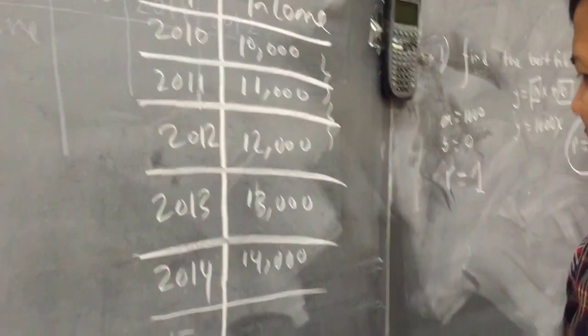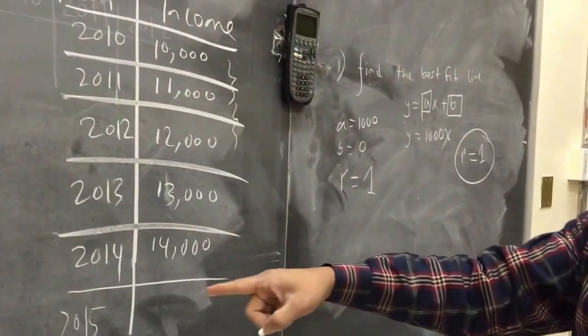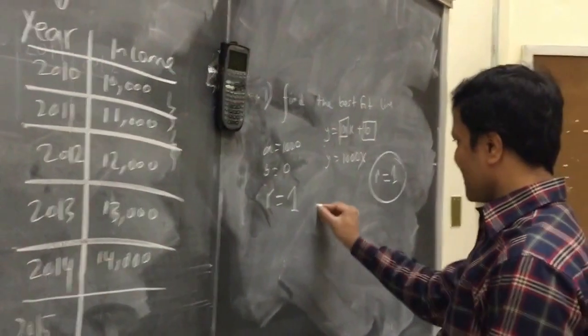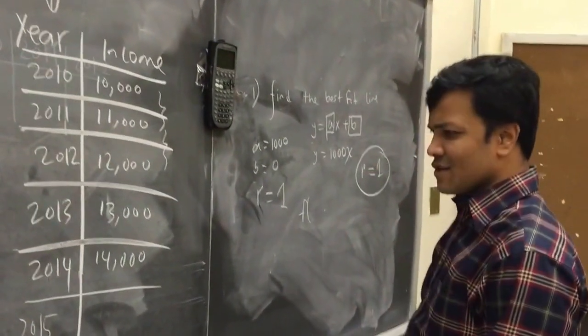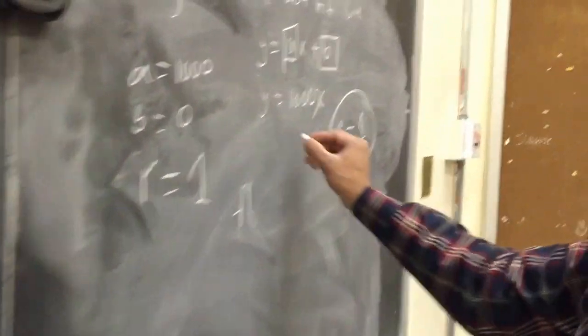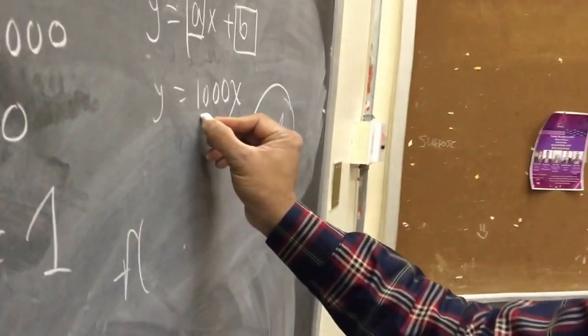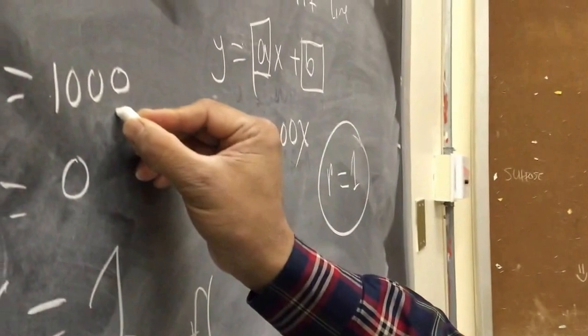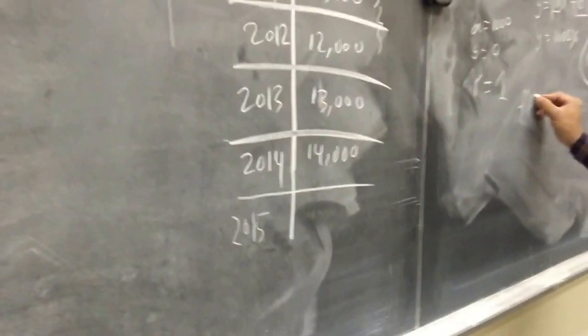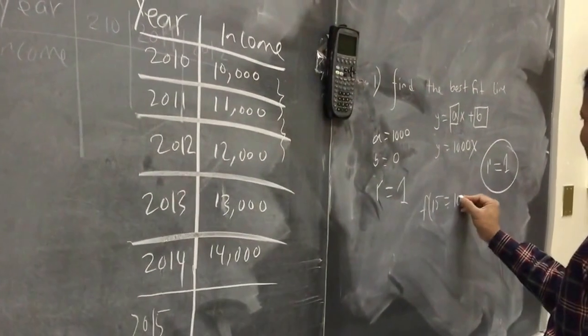In 2015, what would be his income in 2015? We can find out his income in 2015. So that would be, since A is 1,000, 2015 is 15. So 1,000 times 15 is,